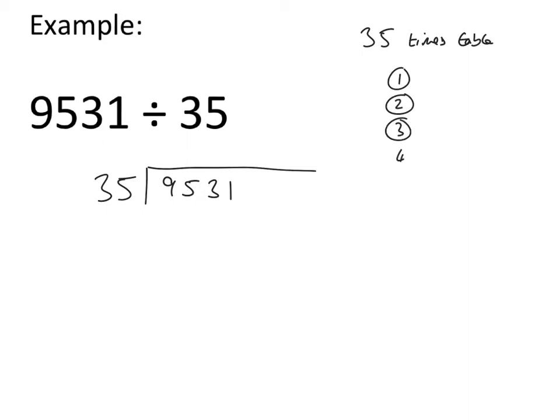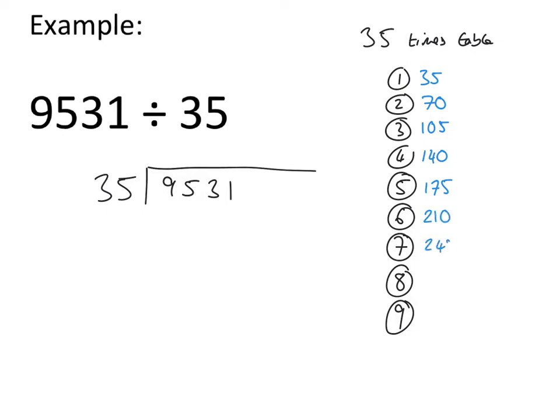So we're going to write out up to 9 what each of these numbers are multiplied by 35. Now the reason this is easy is because you are just writing down the number 35 and then adding 35 to the number above to get your times table. It makes it a lot easier when we're going through the process if you have all these numbers written out already. So that's the first step.